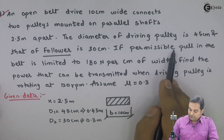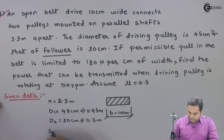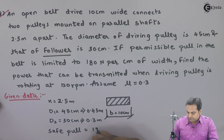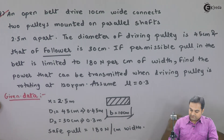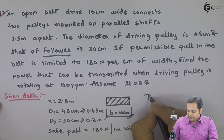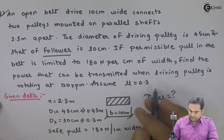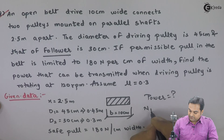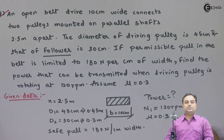The permissible pull in the belt is limited to 180 newton per centimeter of width. This safe pull is 180 newton per centimeter width. We have to calculate how much power is transmitted when the driving pulley is rotating at 120 rpm, so n1 is 120 rpm. And mu is equal to 0.3.